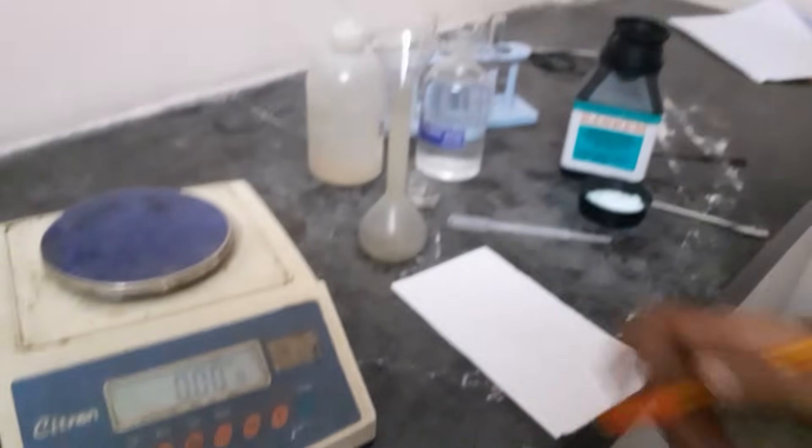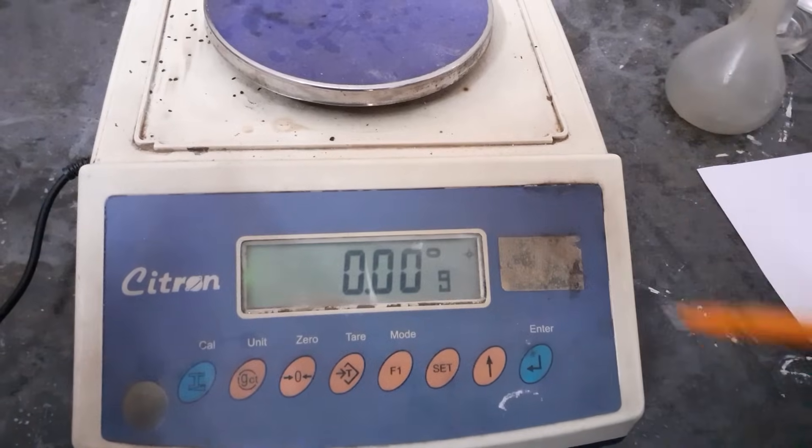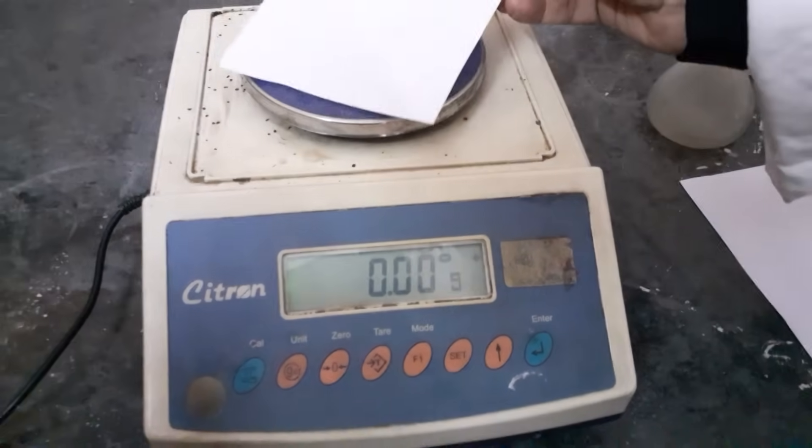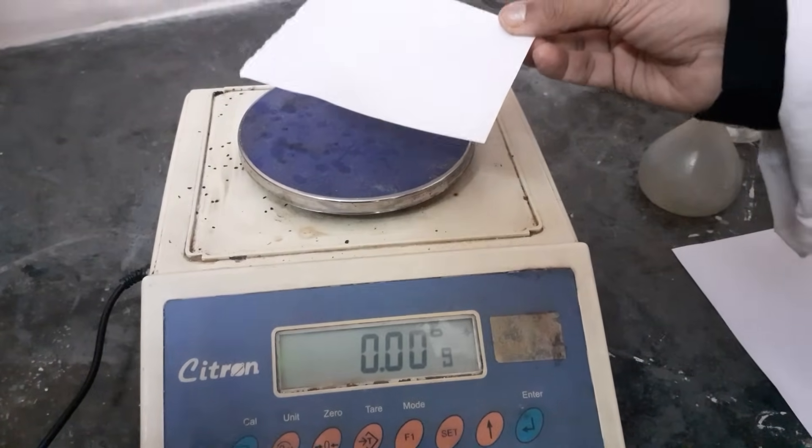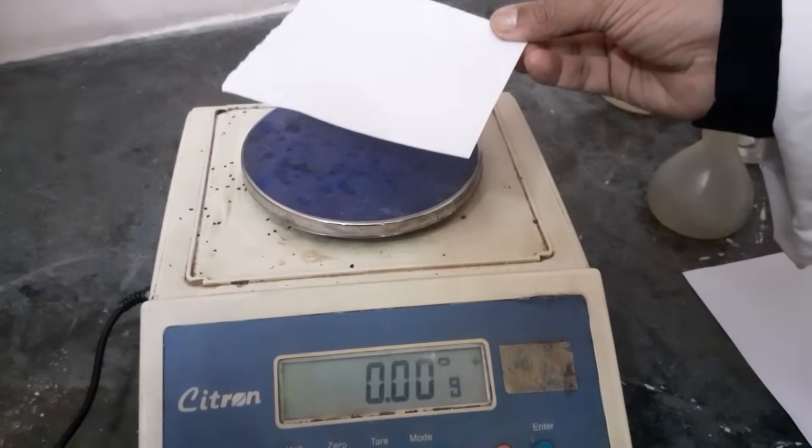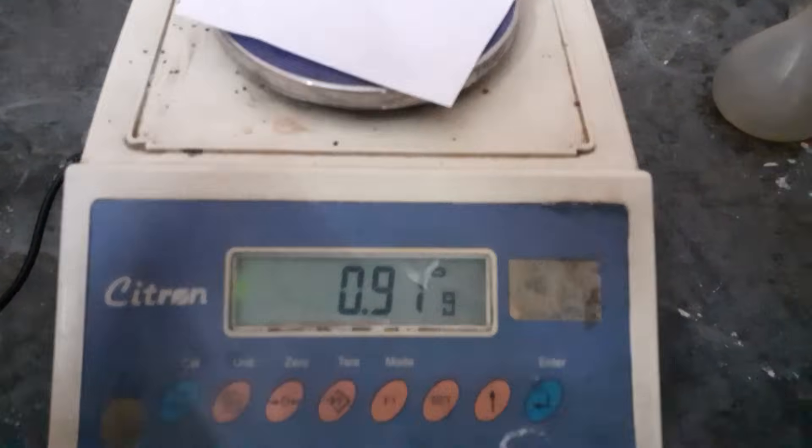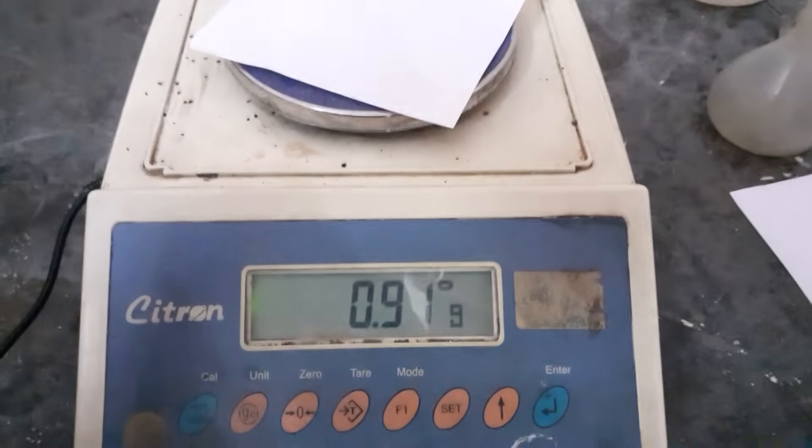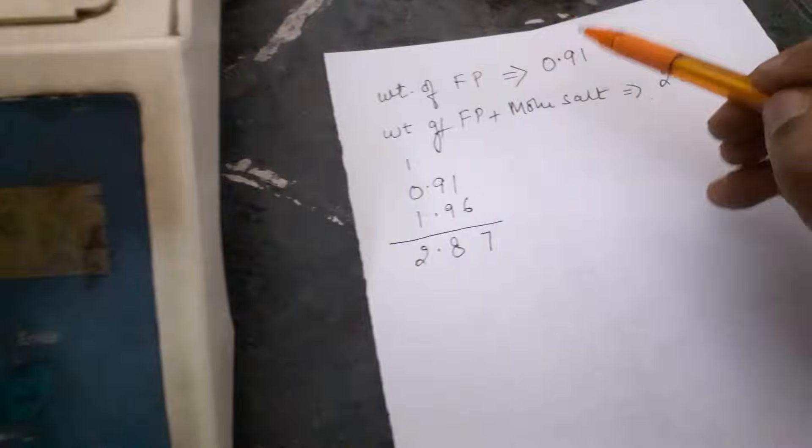For this you require a digital balance in the class. You can use a paper to weigh, you can use a filter paper to weigh, you can even use a watch glass, whatever is asked by your teacher. So first we need paper mass. As you can see the mass of the paper is 0.91. The weight of the filter paper is 0.91.